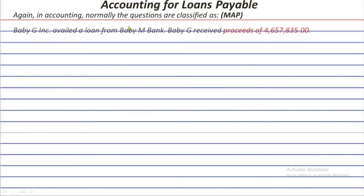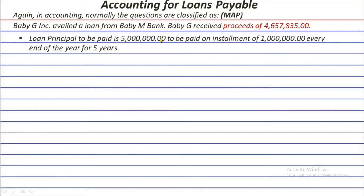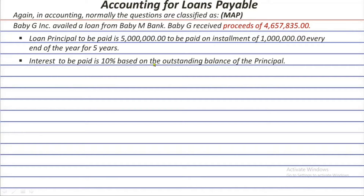Let's have the sample problem. BBG Incorporated availed a loan from BBM Bank. BBG received proceeds of 4,657,835. The loan principal to be paid is 5 million, but the twist is that the 5 million principal is to be paid in installments of 1 million every end of the year for five years. Interest to be paid is 10 percent based on the outstanding balance of the principal, meaning the interest paid every year is not the same since the principal changes each year. The effective rate has been computed at 13 percent.